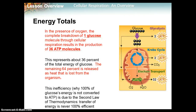So, energy totals: in the presence of oxygen, the complete breakdown of one glucose molecule through cellular respiration yields a total of 36 ATP molecules across all three stages — two ATP from glycolysis, two from the Krebs cycle, and 32 from the electron transport chain. This represents about only 36% of the total energy glucose brings in. The remaining 64% is released as heat lost from the organism.